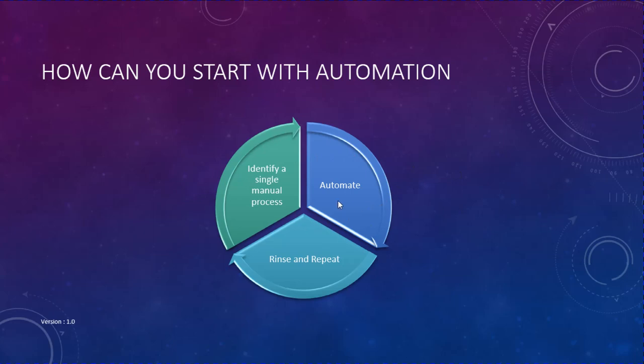Once you've successfully automated that single manual process, you can rinse and repeat — pick a second process, like patching, automate that, and then go on to pick a third. I hope you've understood why we need automation in the current IT world. With this, we've come to the end of this lecture. See you in the next one!